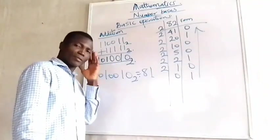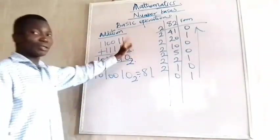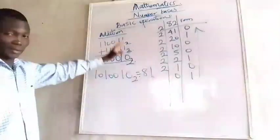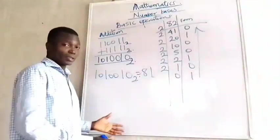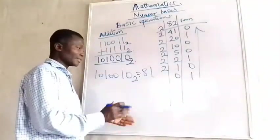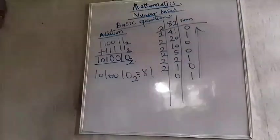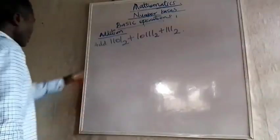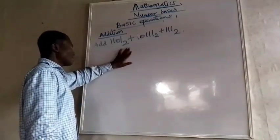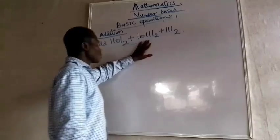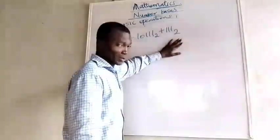The important thing is to have the base in mind. Addition under all bases is the easiest operation. Let's see if we can do one more. We have to add 1101 base 2 plus 101111 base 2 plus 111 base 2.